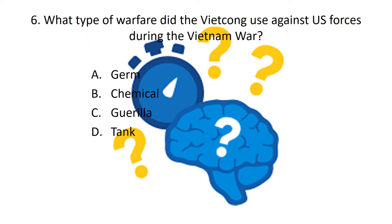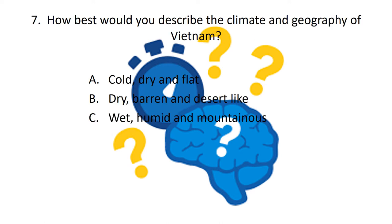Question six: what type of warfare did the Viet Cong use against US forces during the Vietnam War - guerrilla warfare, chemical warfare, or tank warfare? It was guerrilla warfare, which we'll look at. Question seven: how best would you describe the climate and geography of Vietnam - cold and flat, dry and desert-like, or wet, humid and mountainous? The answer is wet, humid and mountainous.